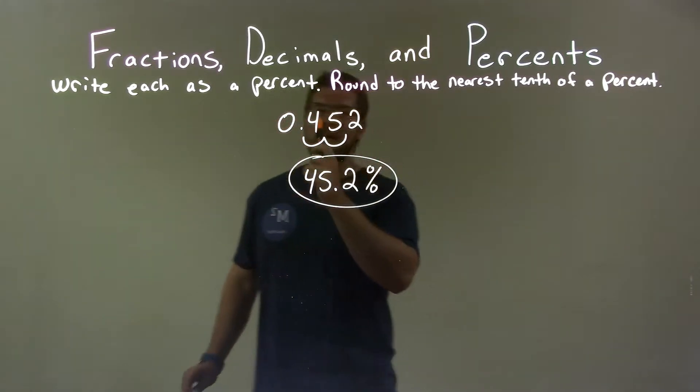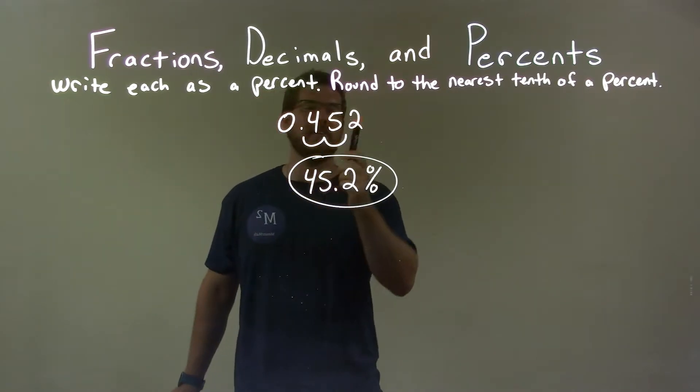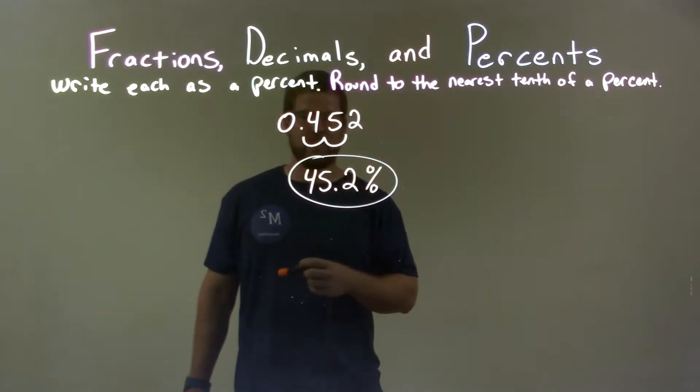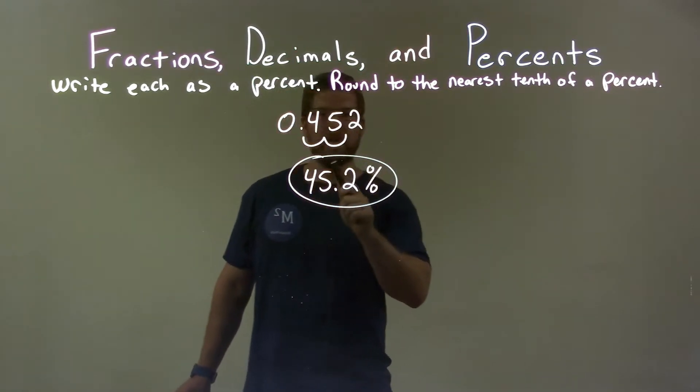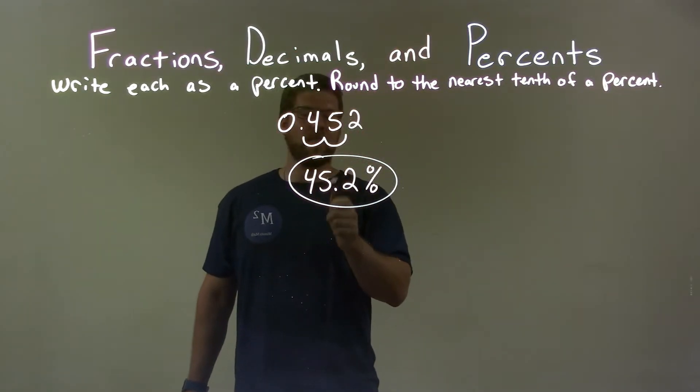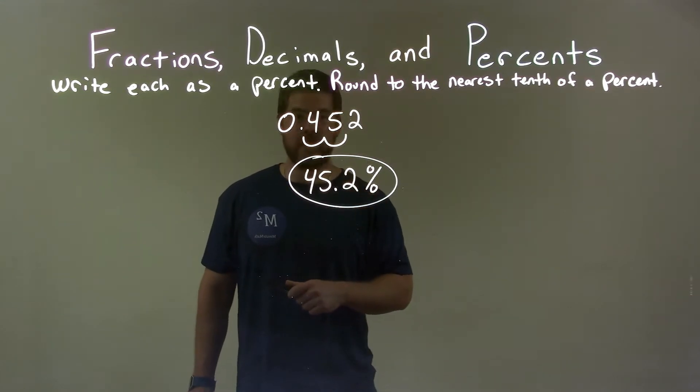So we're given a quick recap here, given 0.452 and we need to write that as a percent. So we move the decimal place two spots to the right which gives us 45.2% and that is our final answer.